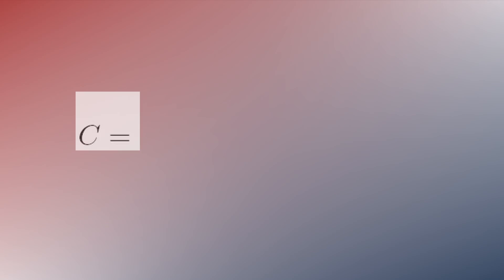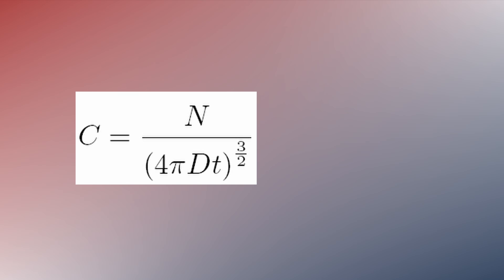This equation says that the average number of molecules observed is equal to the number of molecules transmitted, divided by a term that includes the diffusion coefficient, the time elapsed since transmission, and the number of dimensions, let's say three, but you could also use one or two.